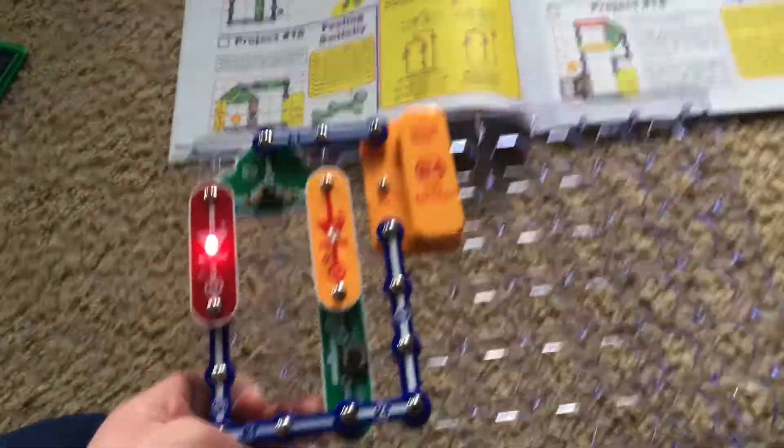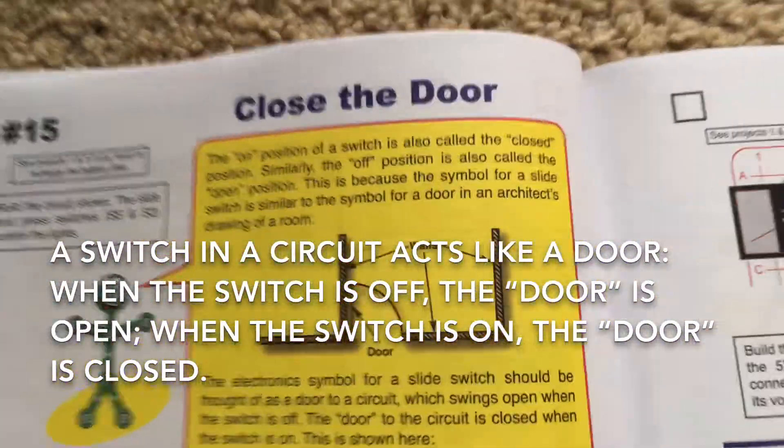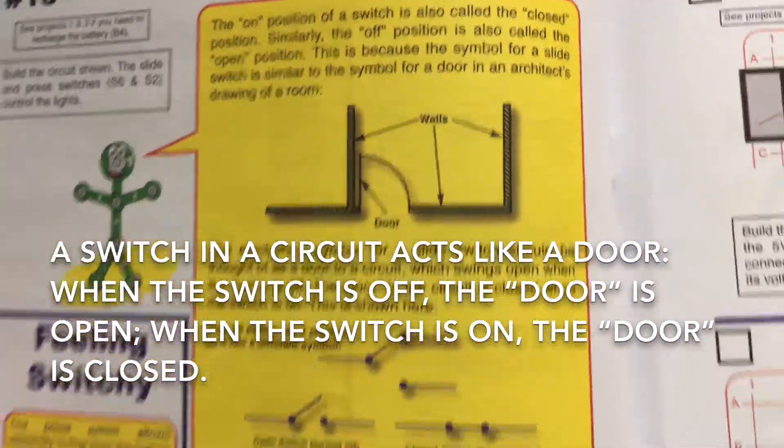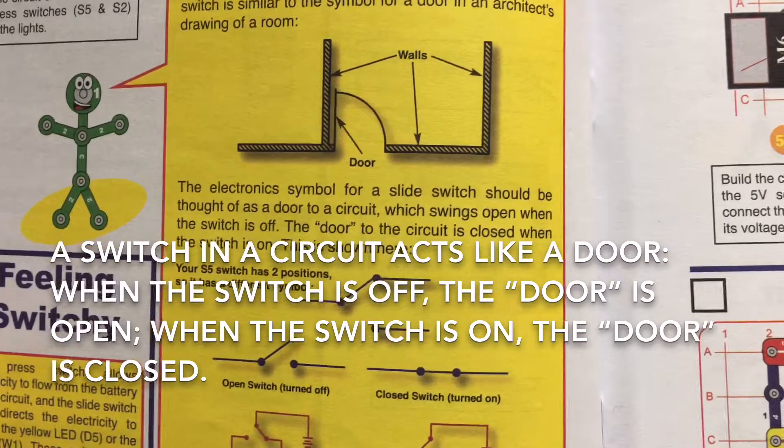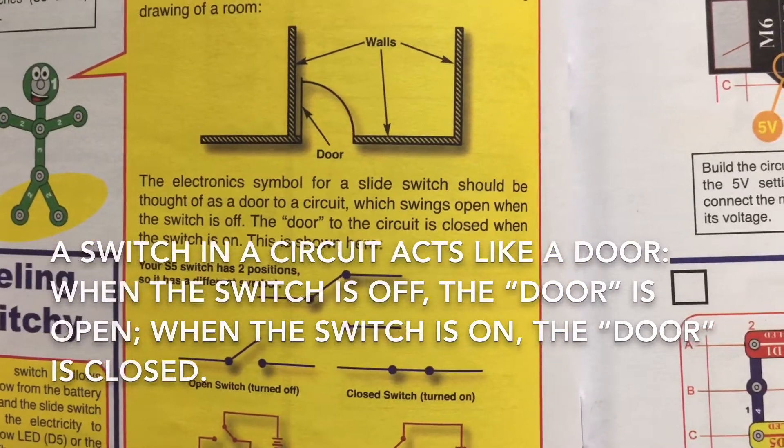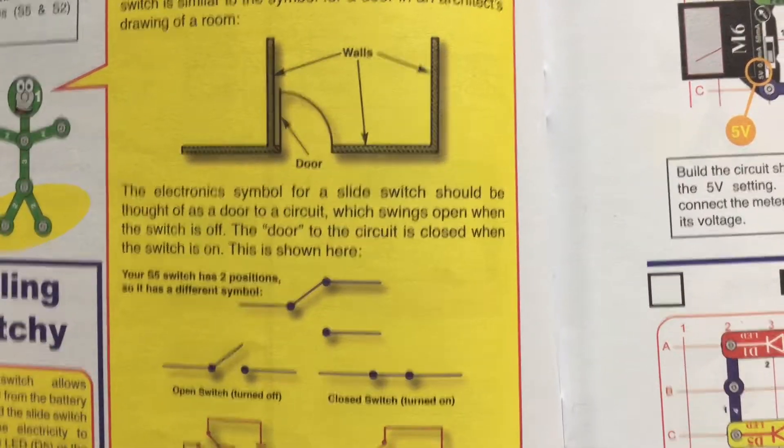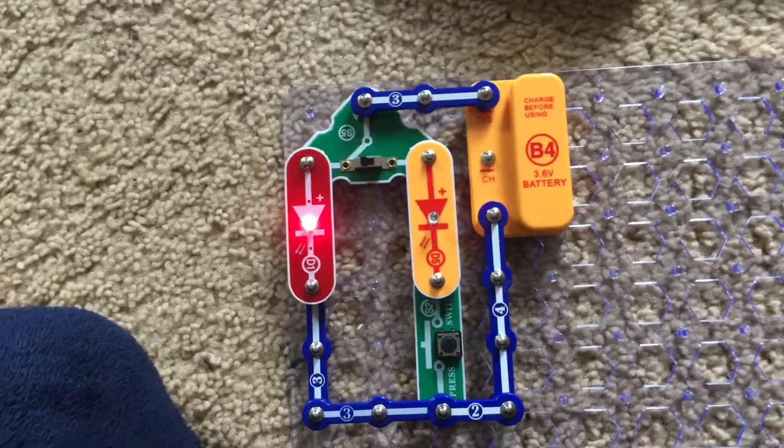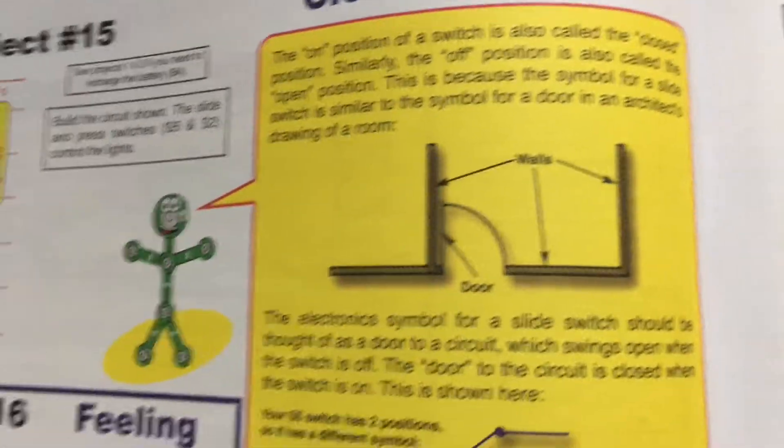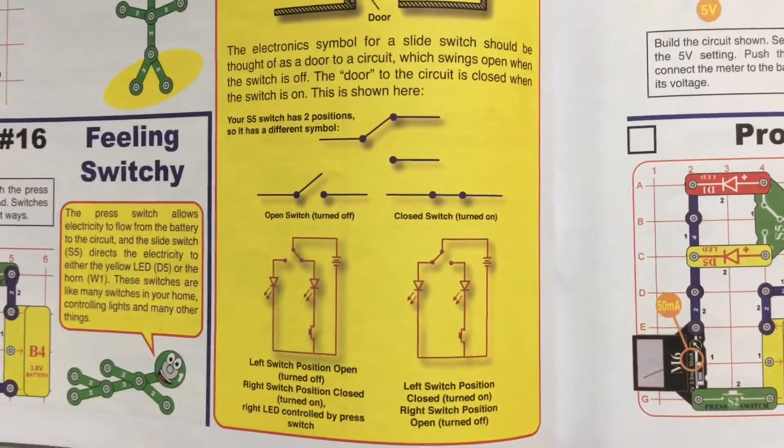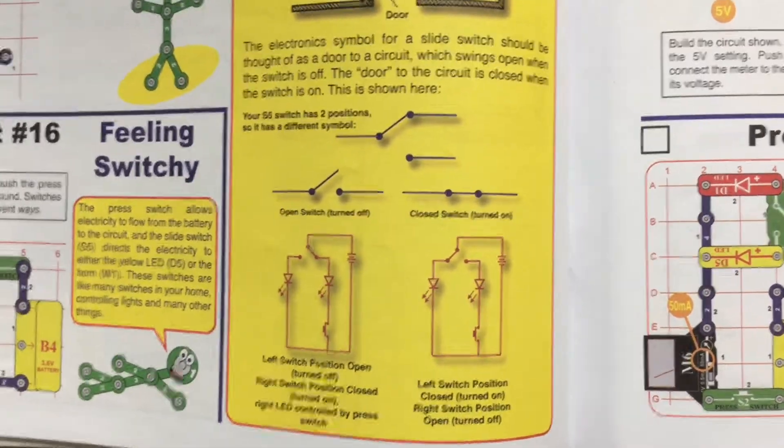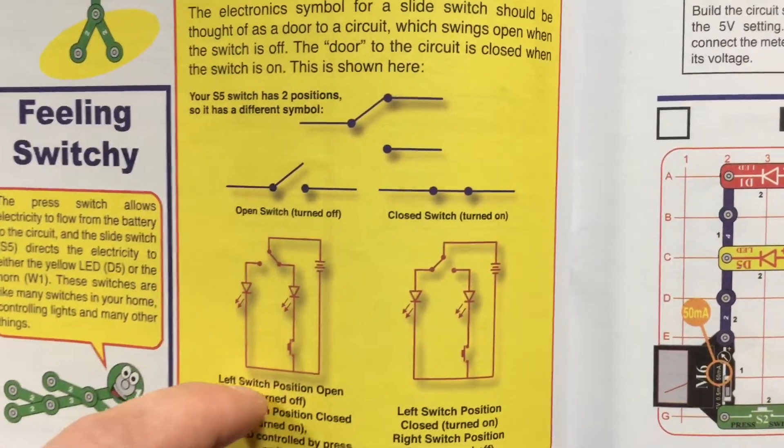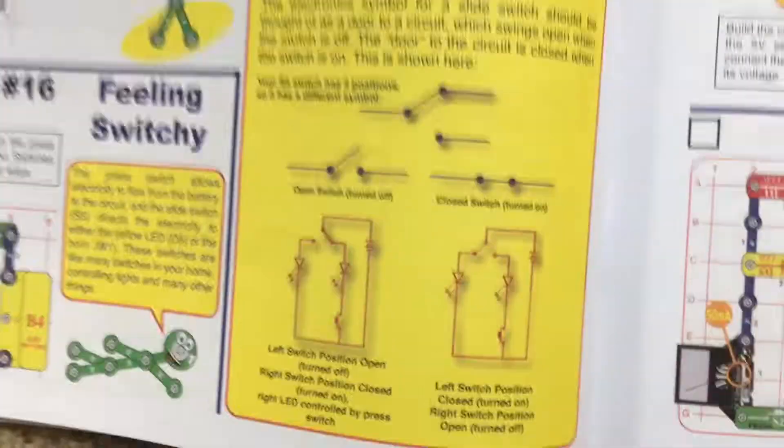The switches in a circuit can be thought of as doors. When the switch is on, the door is closed. But when the switch is off, the door is open. And here's some diagrams that might give you a better idea with how the doors in this circuit work.